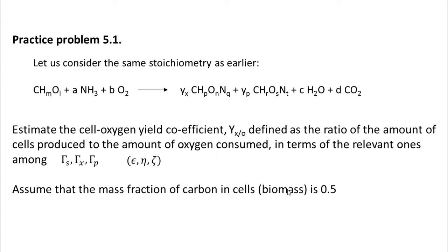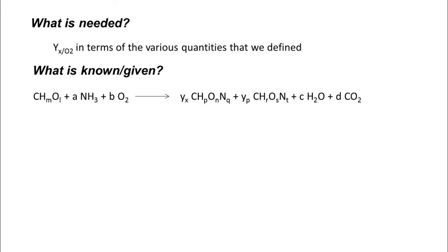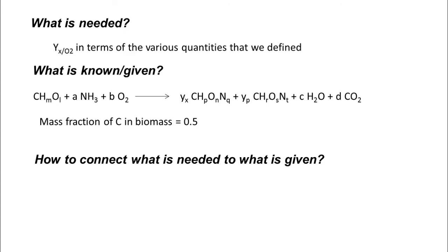Let us look at the solution. What is needed? Our usual first question. Y_x/O in terms of the various quantities that we have defined is what we need. What is known or given? The stoichiometric equation is known. The mass fraction of carbon in biomass is 0.5. And how do we connect what is needed to what is given?